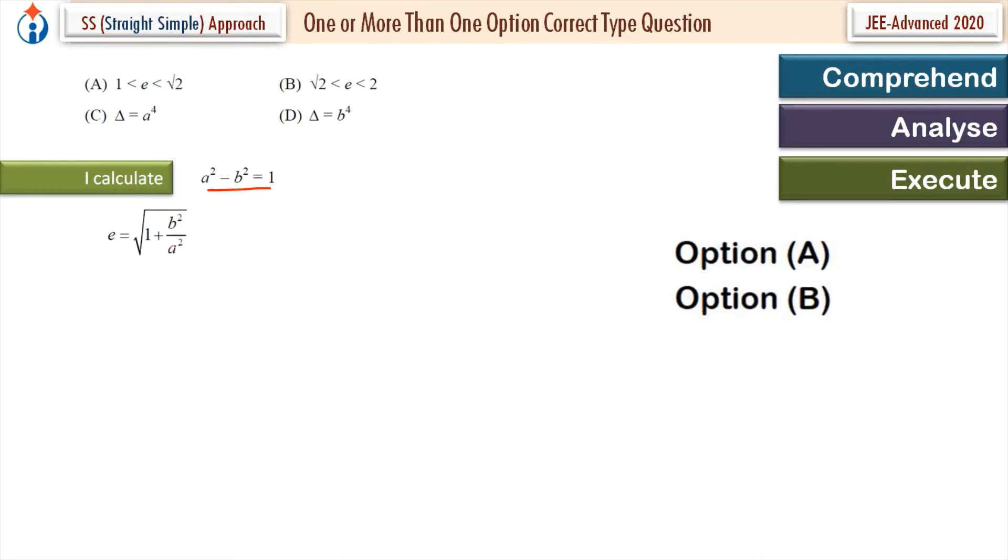And we will look for this. So e is equal to this. Now a² is 1 plus b². Now b² upon (1 plus b²) is definitely from 0 to 1. Denominator is 1 more than numerator. And numerator and denominator both are positive terms. So b² upon (1 plus b²) is 0 to 1. I have to check the value of e. So add 1: 1 to 2. Square root of both. We take the square root. So eccentricity is from 1 to root 2. Simple calculations. I got the answer. True statement is A, not B. Incorrect.